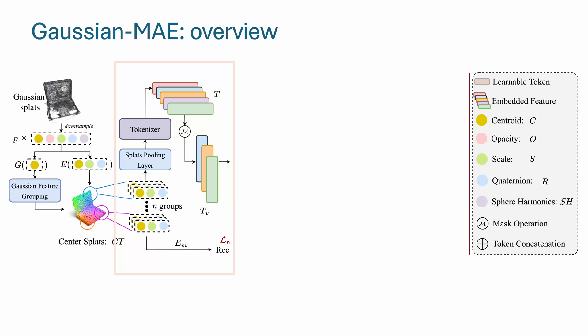Once we have the groups, we move to the splats pooling layer. Here, instead of finding k neighbors for each group center, we enlarge the neighborhood to cover more Gaussians. Then,